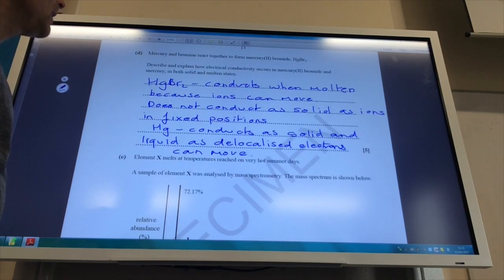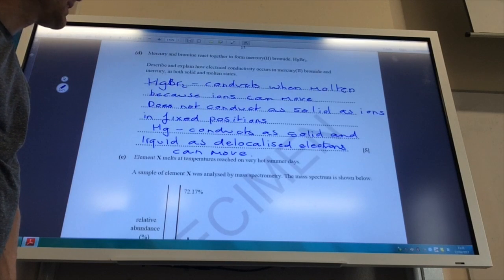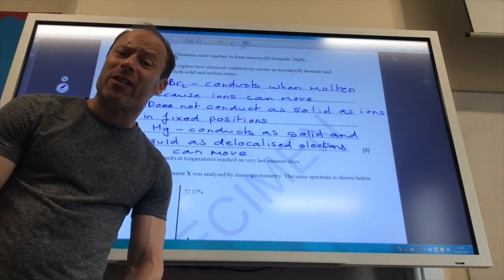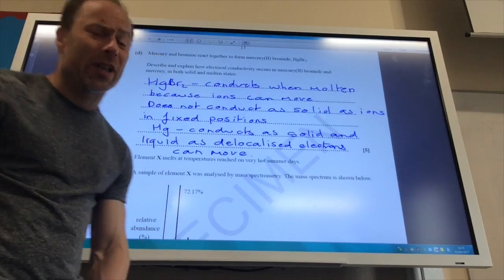So we've got mercury 2 bromide being produced and it wants me to compare the electrical conductivity of mercury 2 bromide and mercury in the solid and molten states. So the key thing is in your answer cover all the points they've asked you to. Loads of people just missed something out. So here we go.